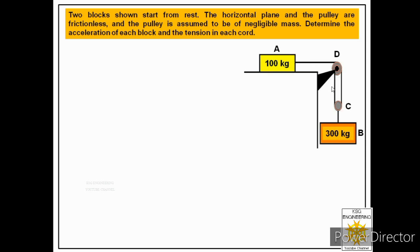It is mentioned that the horizontal surface and the pulley are frictionless, meaning there is no friction. The pulley is assumed to be of negligible mass, so we will consider the mass of the pulley equal to zero.